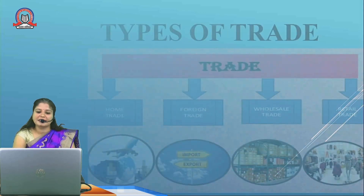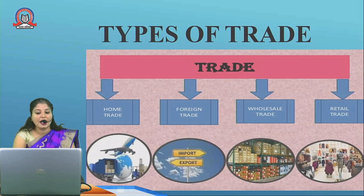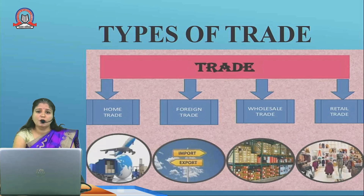Types of trade: home trade means buying and selling of goods and services within the political boundary of the country, whereas foreign trade means buying and selling outside the political boundary. Within internal or home trade, it consists of wholesale trade — purchasing goods directly from the producer in a lump sum, in huge quantity, and selling to the retailer in small lots. Retailer refers to purchasing goods from the wholesaler and selling to the consumer in small lots.